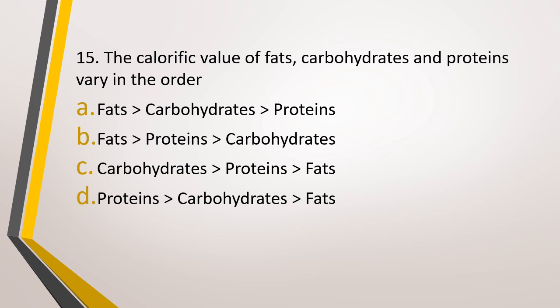Question number 15. The calorific value of fat, carbohydrates, and proteins vary in the order: option A, fat highest, followed by carbohydrate, then proteins; option B, fat highest, followed by proteins, then carbohydrates; option C, carbohydrates highest, followed by proteins and fats; or option D, proteins highest, followed by carbohydrates, then fats. The correct answer is option B — fat has the highest calorific value, followed by proteins, then carbohydrates.